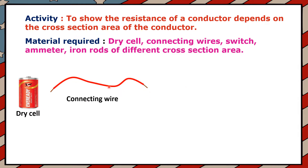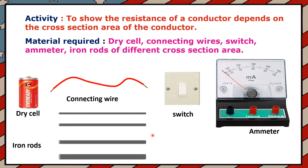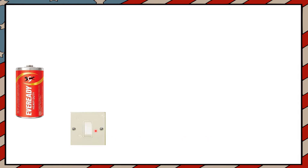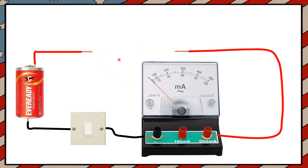You can see here: this is a dry cell, connecting wires, switch, and ammeter. This ammeter measures current in milliamperes in the circuit. Here are the iron rods of the same length but having different cross-section areas. All these iron rods are the same length but their cross-section areas are different. First, I will make a circuit like this — a dry cell and here is the switch and ammeter — and I have left some gap here. In this gap, I will place iron rods of different diameters.